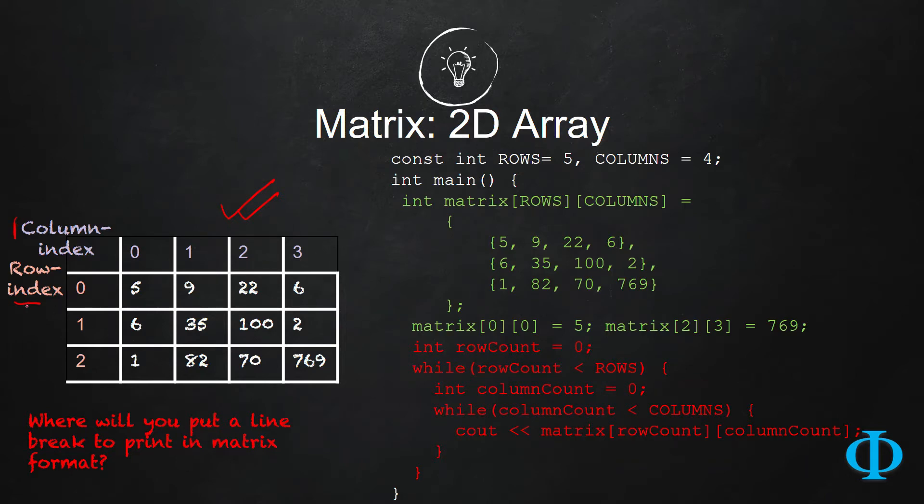Row is incremented in this direction from 0, 1, 2 like this, whereas column is incremented in this direction like 0, 1, 2, 3, something like this. If you want to access one element in this two-dimensional array, you have to use two different index, that is row index and column index.